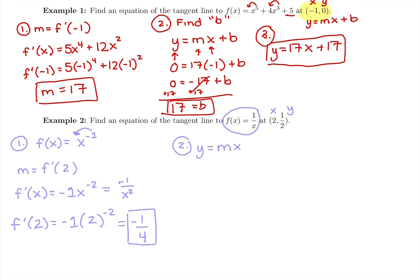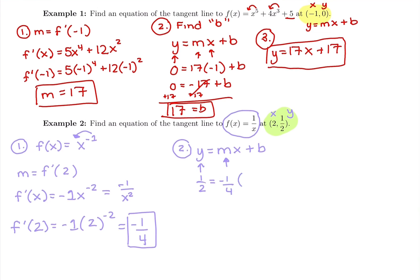Second step is to find b. So we're going to write out y equals mx plus b and solve for what b is. So we know y from our point. So I'm looking at the point here and I have 2 comma 1 half. So 1 half is the y value. M is what we just found. Our slope of the tangent line was negative 1 fourth. And then that's getting multiplied with x, the x value of the point is 2 plus b. So x and y come from the point 2 comma 1 half. And our m comes from the first step, which is why we find m and then we find b, not the other way around.